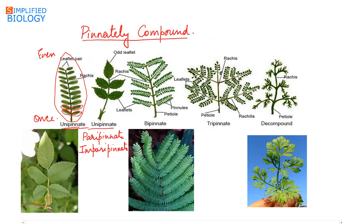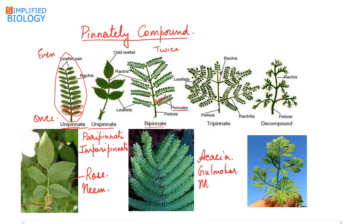An example of imparipinnate is rose, which has an odd number of leaflets. Examples of unipinnate overall include rose and neem. Next is bipinnate, where the lamina is broken up twice — meaning the leaflets are further broken up to form pinnules. Examples of bipinnate include acacia, gulmohar, and mimosa (Mimosa pudica, the touch-me-not plant).